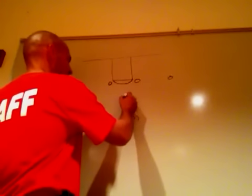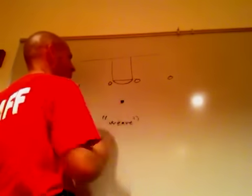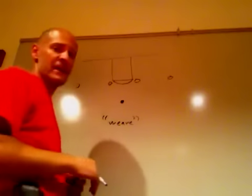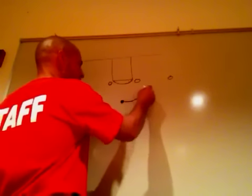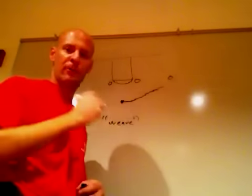So we're in our 1-4 alignment. When point man has the ball, that's exactly what it says. We're looking for weaves. So we dribble hard at the wing. Got to really dribble hard at that wing.